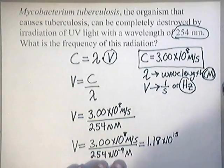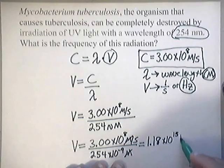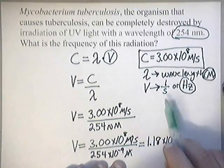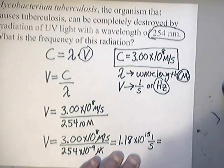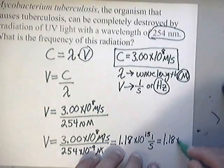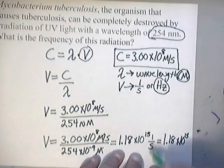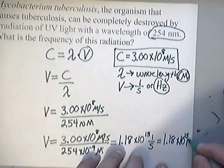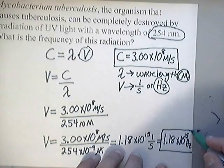Now, if you notice on your units, your m's will disappear and you're left with 1 over a second. And that's the unit of hertz. So basically all you have to do is just do one more step to rewrite this to be a nice answer. That would be 1.18 times 10 to the 15th. And in place of the 1 over a second, you'll write hertz. So HZ. And folks, that is your answer.